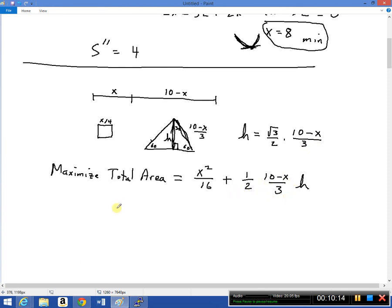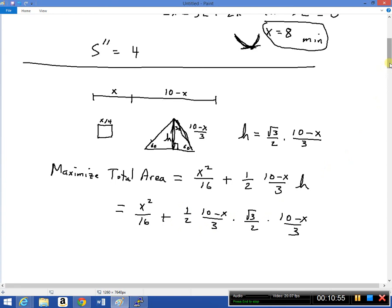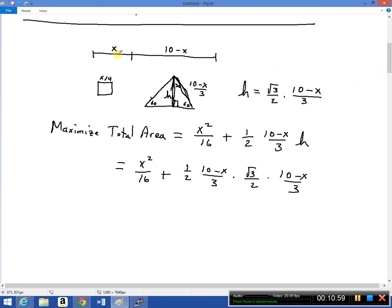So that allows us to plug that in here, and so our total area is going to be x² over 16 plus 1 half times 10 minus x over 3 times square root of 3 over 2 times 10 minus x over 3. And in this problem on the quiz, it says you only have to draw a picture, find a function of one variable that is to be maximized, and identify its domain. You don't have to do any calculus. So the next step would be calculus. But let's go ahead. We never did the domain for this function. So how big can x get? How small can x get?